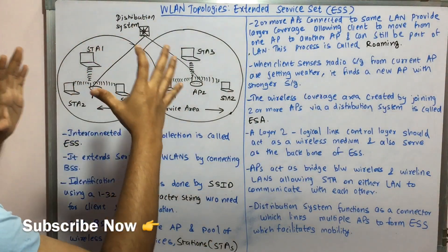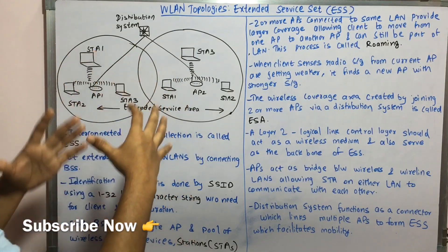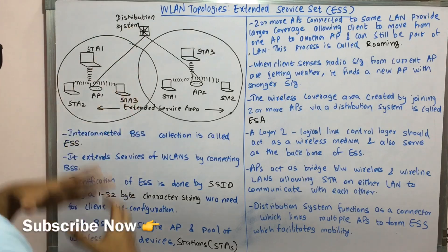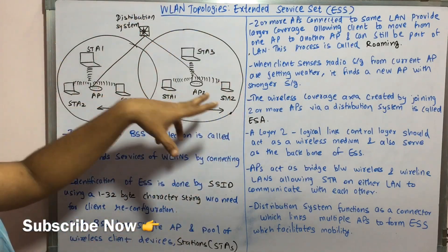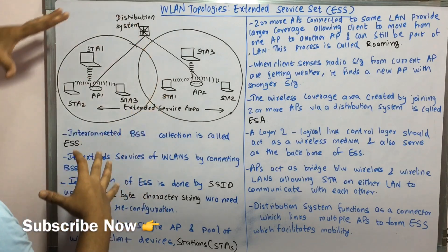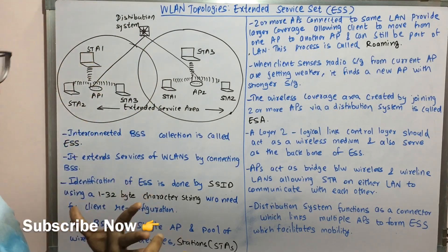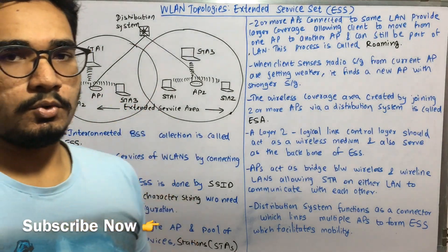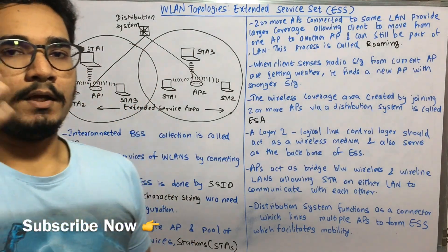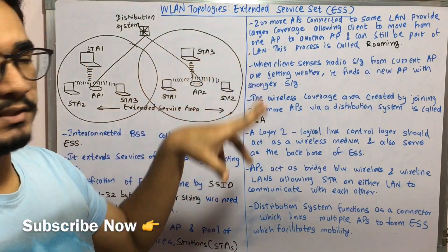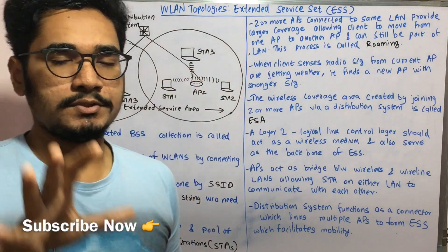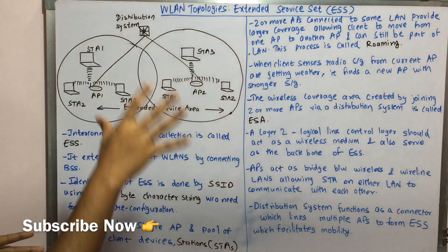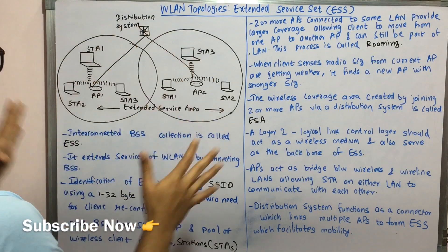This is the architecture showing how the ESS is arranged — where clients and APs are positioned. You have a distribution system which connects two different APs at two different locations. The devices connected are called STAs, which are mobile stations. In IEEE 802.11 WLANs, mobile stations are specifically named STAs — this naming is unique to 802.11.